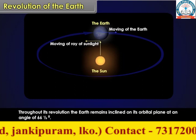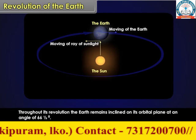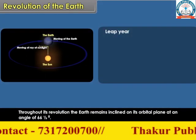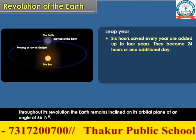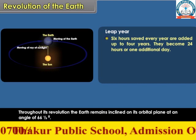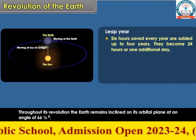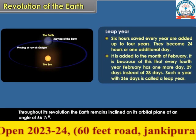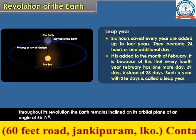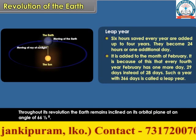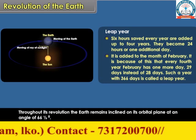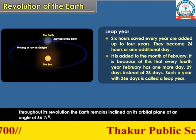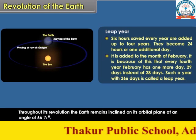Throughout its revolution, the earth remains inclined on its orbital plane at an angle of 66 and a half degrees. Leap year: six hours saved every year are added up over four years. They become 24 hours, or one additional day. It is added to the month of February. Because of this, every fourth year February has one more day — 29 days instead of 28 days. Such a year with 366 days is called a leap year.